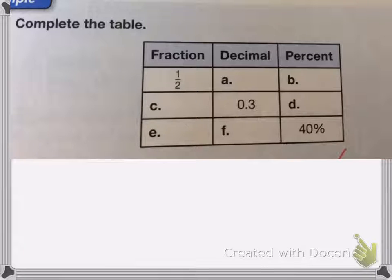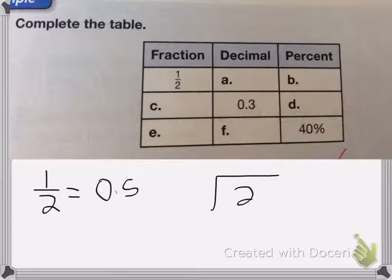So one half, I know, is equal to 0.5. Now if you didn't know that, you can divide 1 divided by 2 and you would get 0.5. So the decimal equivalent is 0.5.